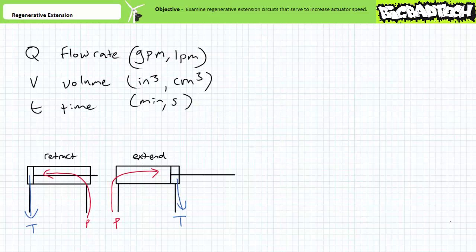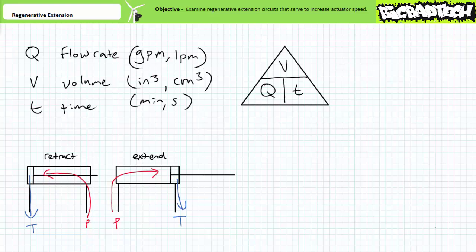As you recall, the time to fully extend or retract a hydraulic cylinder is a function of two variables: flow rate and volume. Flow rate is a measure of volume per unit time, typically expressed in gallons per minute or liters per minute, whereas volume is expressed in cubic inches or cubic centimeters. This can be expressed as Q equals V over T. Flow rate is volume over time; volume is flow rate times time; time is volume over flow rate.